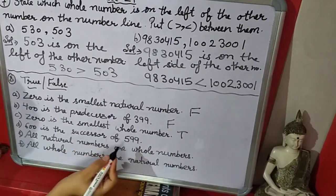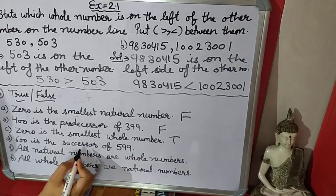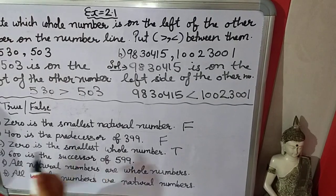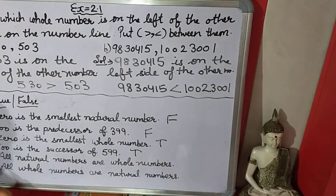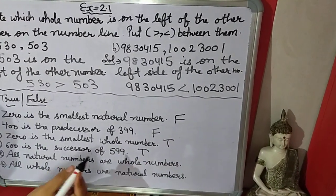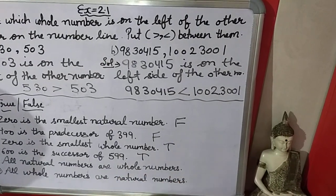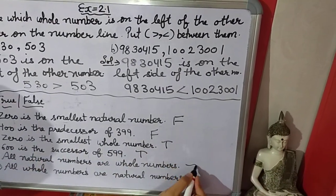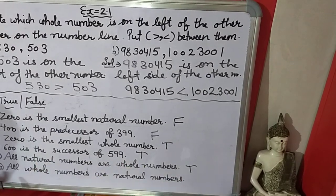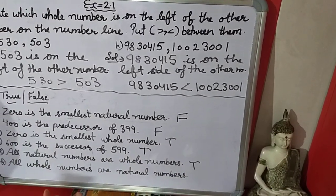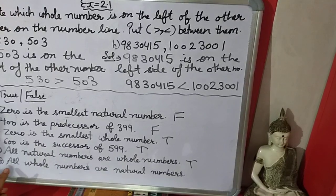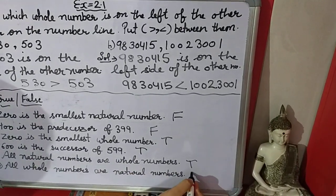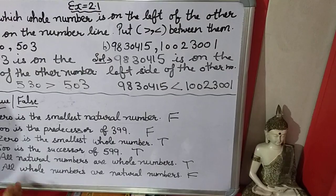Next: 600 is the successor of 599. Yes — in successor we add 1. If we add 1 to 599, we get 600. So it is true. Next: all natural numbers are whole numbers. Yes, we discussed this in the last module — all natural numbers are whole numbers, but all whole numbers are not natural numbers. The statement says all whole numbers are natural numbers — that is false, because 0 is not a natural number.